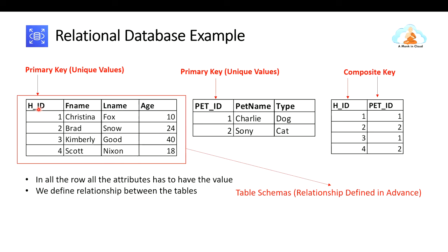The human table has four columns: HID (human ID), FNAME (first name), LNAME (last name), and age. We have four rows with names and corresponding ages. Similarly, I created a pet table with pet ID, the name of the pet, and the type — whether it is a dog, cat, or whatever — giving us three columns and two rows.